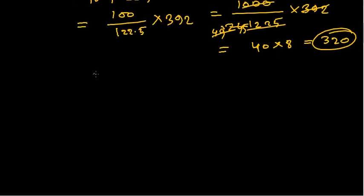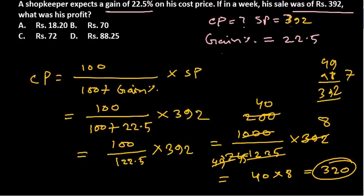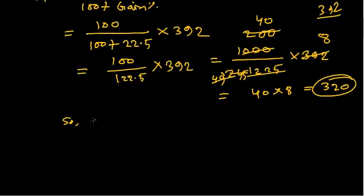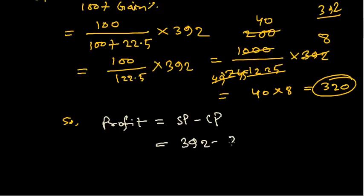So what is the question? The question again: what was his profit? Let's find the profit. It is easy—no percentage, simple profit. It means selling price minus cost price. Stick to the basics. 392 was the selling price, cost price is now 320, so it is 72.